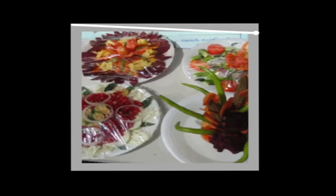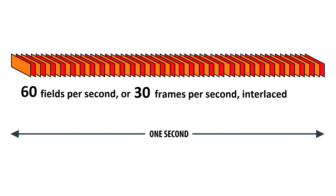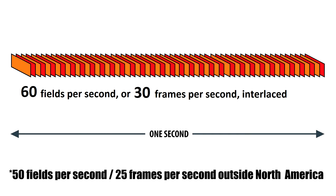Two consecutive fields – one consisting of only even lines, another consisting of only odd lines – form a complete video frame. So, one could say that the image rate of broadcast analog television is 60 fields per second, or 30 interlaced frames per second.